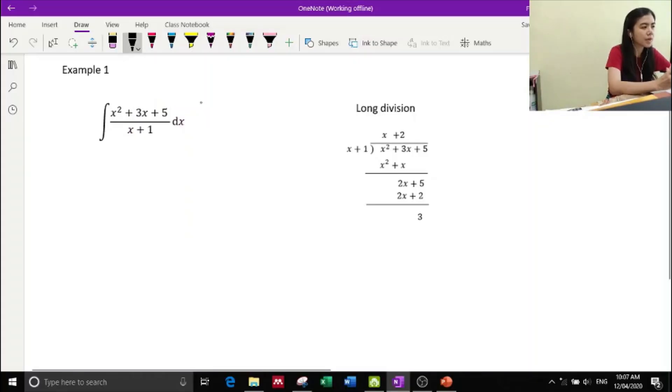Okay, for this example, we have an improper function. What you have to do is simplify it by using long division. And from the long division, what we have here is the answer of x squared plus two, so you have the integration of x.